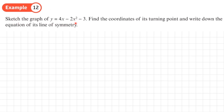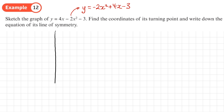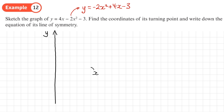Example 2: sketch y = 4x - 2x² - 3, find the coordinates of its turning point, and write down the equation of the line of symmetry. I'll rearrange to -2x² + 4x - 3. Because the coefficient of x² is negative, this is an N-shaped quadratic, so I'll be finding a maximum turning point.